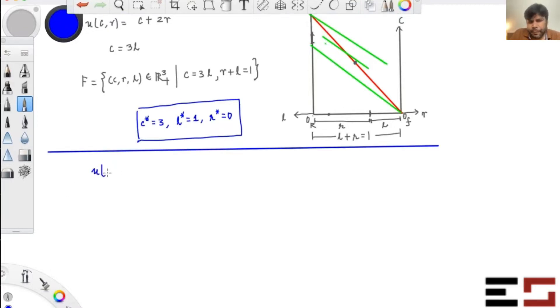Let me put R first and C second so you have no confusion. U(R,C) is equal to R times C, so it's a Cobb-Douglas utility. And let's say C is equal to 2L. So do it.